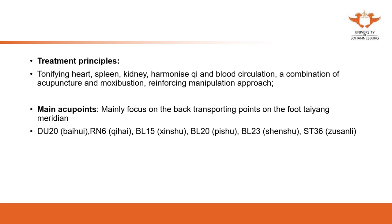Key acupoints include Ren 6 (Qi Hai), the sea of Qi and gathering point of Qi; and Stomach 36. As you can see, most of these treatments focus on the Qi — Ren 6 and Stomach 36 together tonify the Qi. Then the back-shu points focus on specific organs.